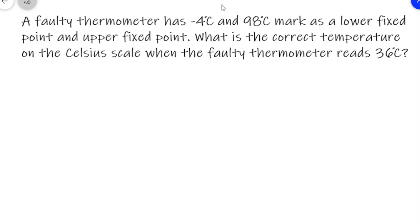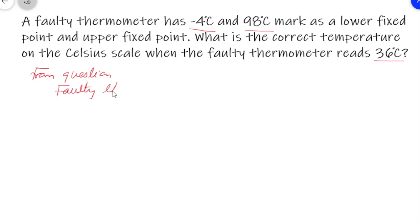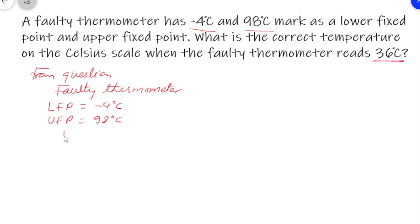A faulty thermometer has minus 4 degrees Celsius as the lower fixed point and 98 degrees Celsius as the upper fixed point. The faulty thermometer reads 36 degrees Celsius, and we need to find the correct temperature on the Celsius scale.